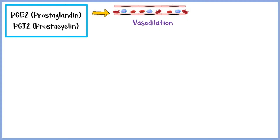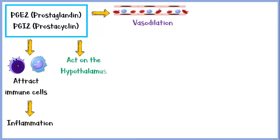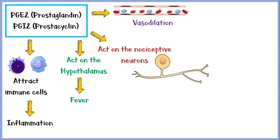These substances also attract immune cells, especially neutrophils and lymphocytes, and further aggravate the immune response. They act on the hypothalamus to set the temperature set point at a higher degree, causing fever. They also act on the nociceptive neurons and lower their threshold for painful stimuli.